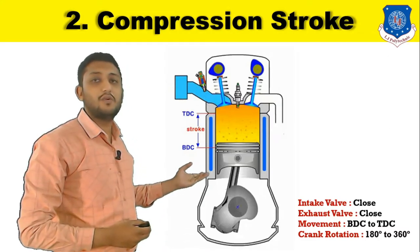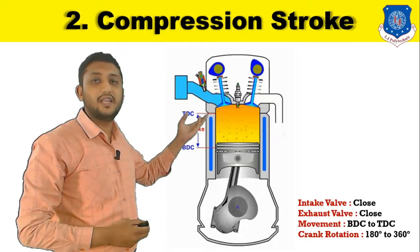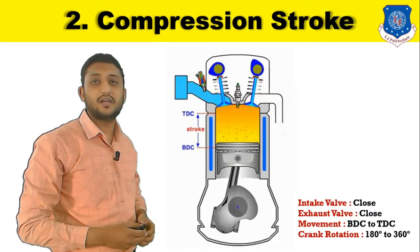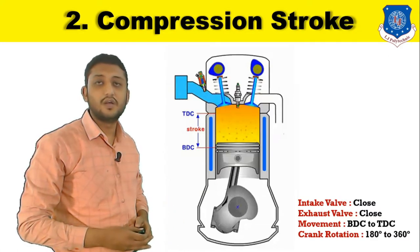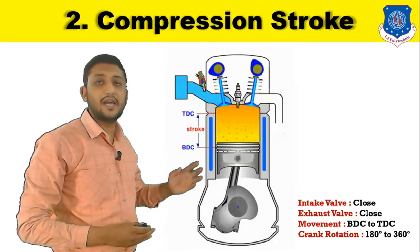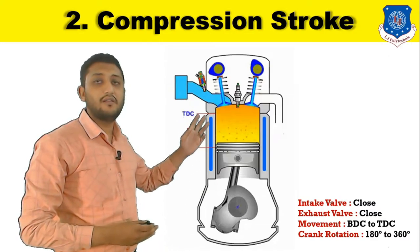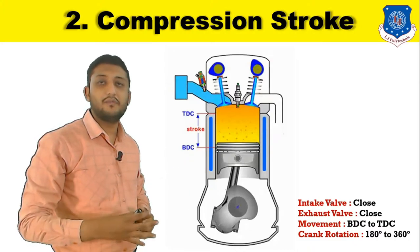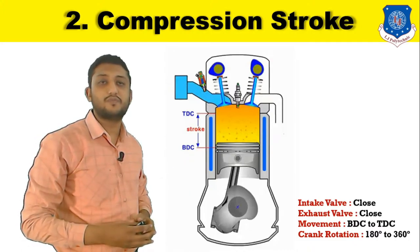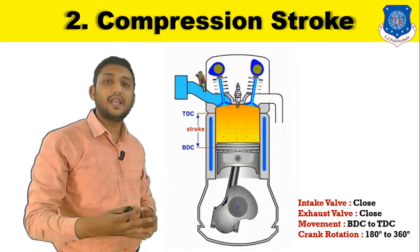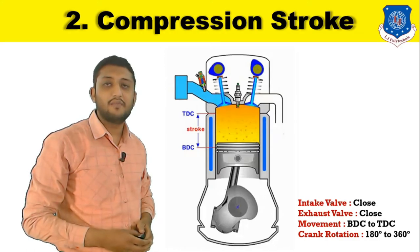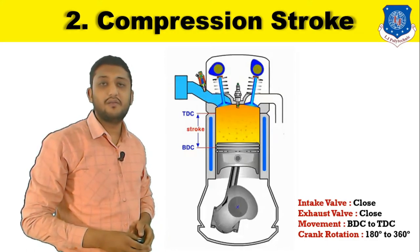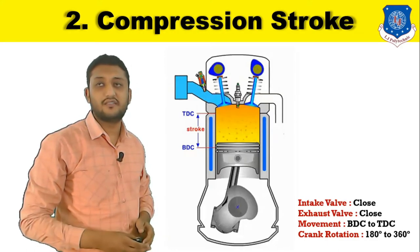As the volume of the cylinder decreases, the pressure inside the combustion chamber also increases. During this time, the inlet valve and exhaust valve — both valves — will be in the closed position. The crank angle theta during compression stroke is 360 degrees.